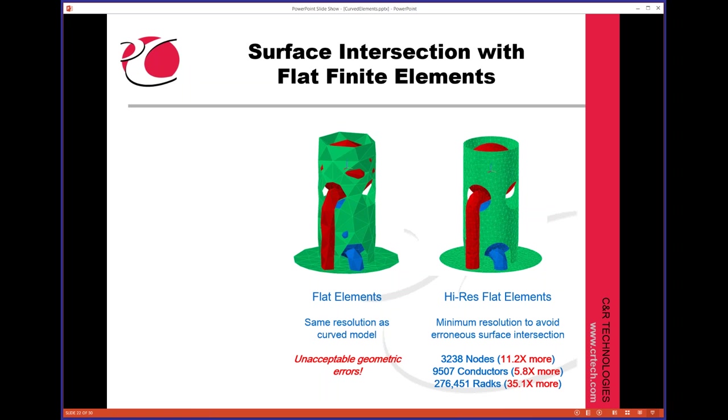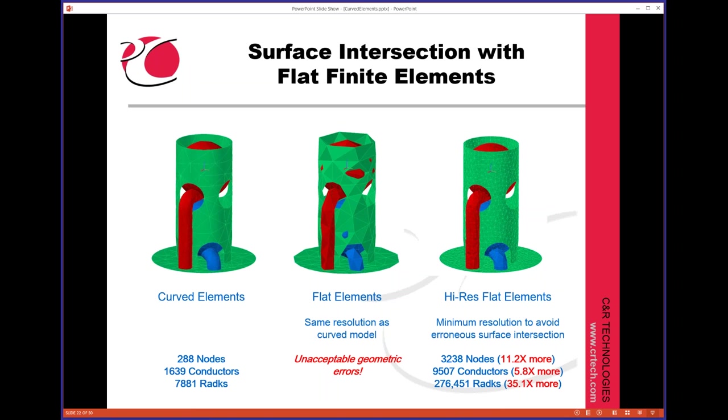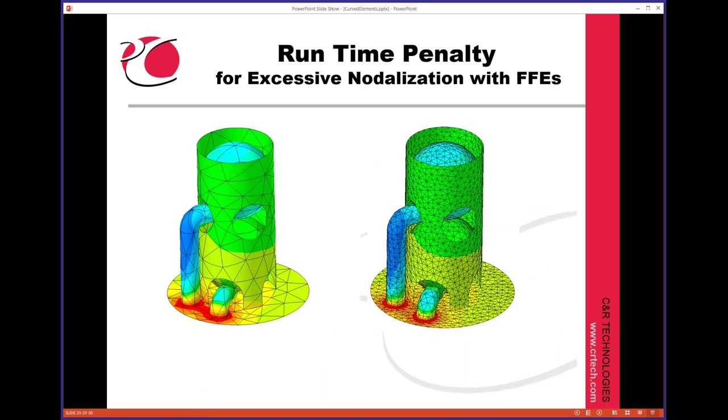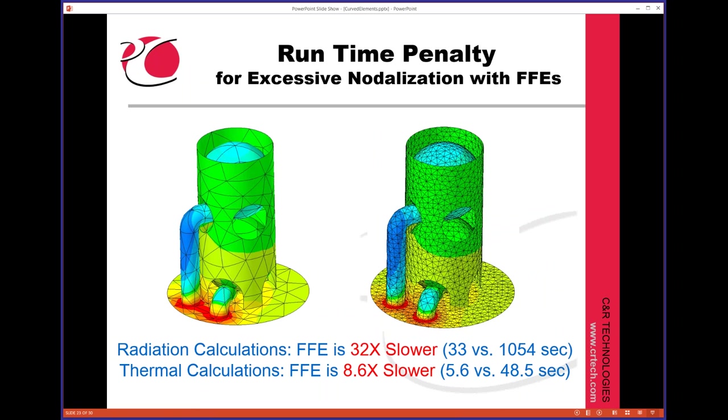And we end up with about 10 times as many nodes and 35 times as many rad Ks. Here's the curve model, the same density as the model in the middle there, 288 nodes versus over 3,000. And if we look at the run times here, these are two separate models, two separate thermal models, and radiation results were 30 times slower, and the CINDA run was about 10 times slower. And this was just a simple example that ran pretty quick on my machine, but if it were, say it was an hour for the model on the left, that's still a day and a half for the model on the right, and you're not going to get too many mission scenarios analyzed, and you're not going to get too many design trades in kind of turnaround time.